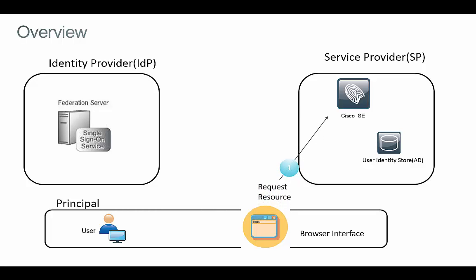In a typical SAML SSO flow, the service provider will request and obtain an identity assertion from the identity provider. Based on this result, ICE can perform a policy decision based on the attributes retrieved during the authentication process. In this case, the IDP will be configured to return to ICE two particular attributes: the MemberOf and email address for that particular user object in Active Directory.